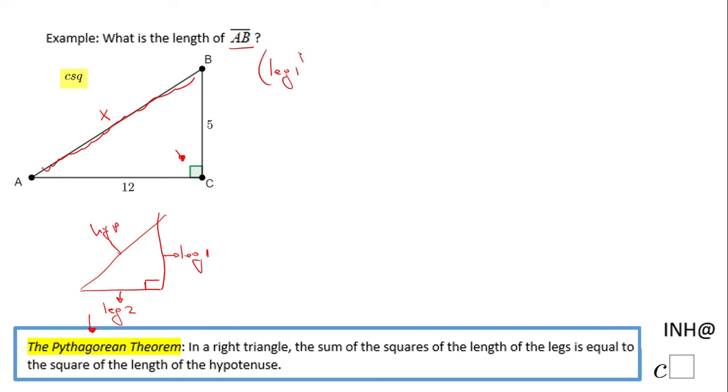So basically the theorem says that if we square leg one, if we square leg two, and we add them, we get the hypotenuse squared. This theorem is better known with this format: a squared plus b squared equals c squared.